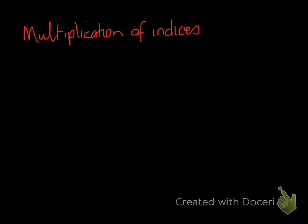In this video I want to talk about multiplication of indices. In a previous video I introduced what indices were and we spoke about the basics of powers or indices. In this video I want to show you how we start to apply operations to our indices — how to multiply, divide, add, and all of those sorts of things. The first operation I want to talk about is multiplication, and I'll give you an example of a couple of indices that I want to multiply together.